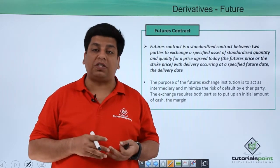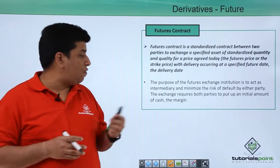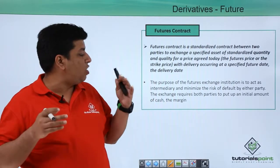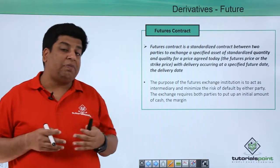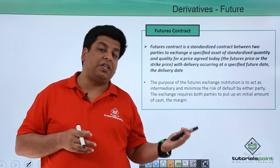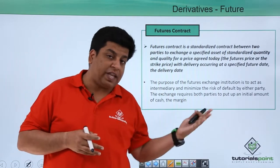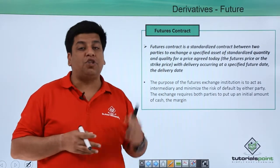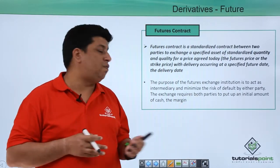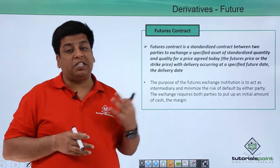The purpose of the future exchange institution is to act as a facilitator or intermediary to minimize the risk of default — that is, the counterparty risk. The counterparty risk which exists in the forward contract is not present in the future contract, because of the future exchange institution.